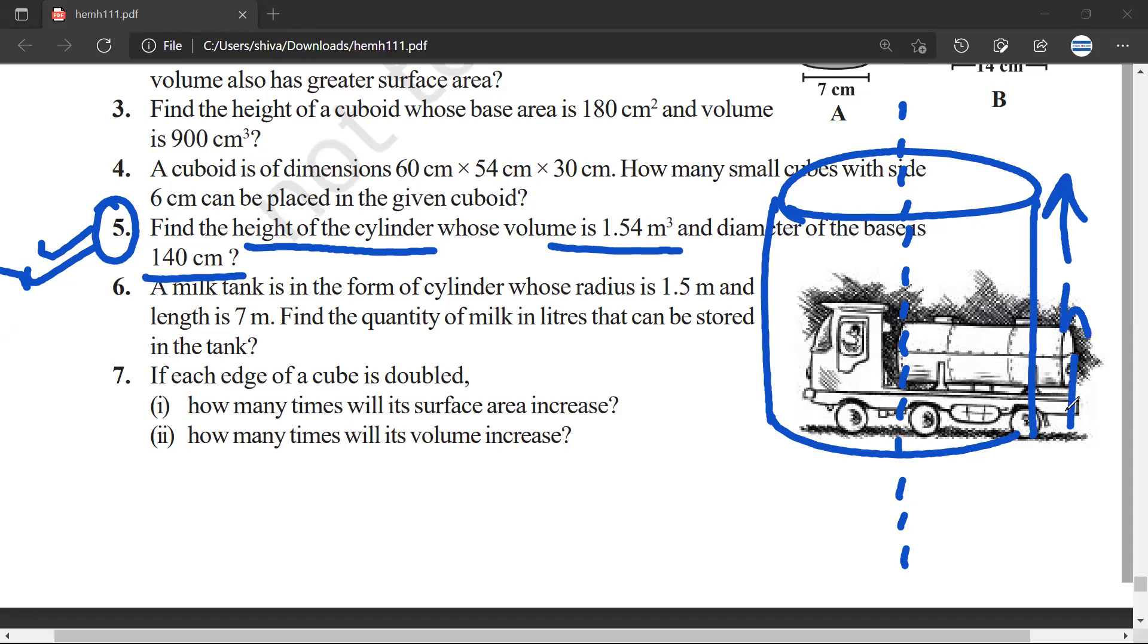The volume is 1.54 meter cube. This is the volume of the cylinder. Diameter is 140 centimeter, therefore radius would be 70 centimeter. What do you suggest? How should we do this? Any suggestion?